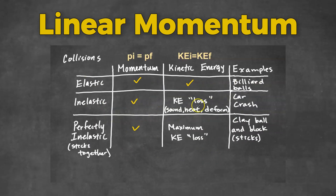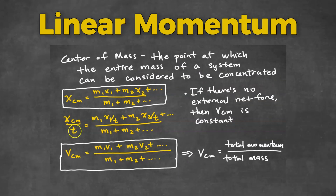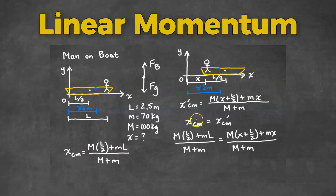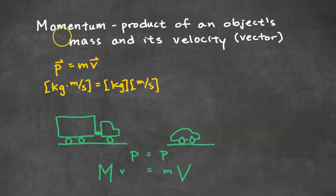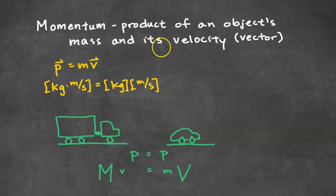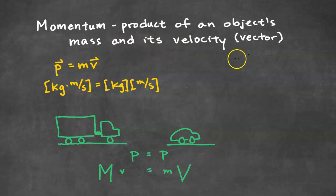In this video, we're going to review linear momentum for AP Physics 1. We're going to start by defining momentum. Momentum is the product of an object's mass and its velocity. Momentum is a vector, which means it has a magnitude and a direction. The equation for momentum is p = mv.